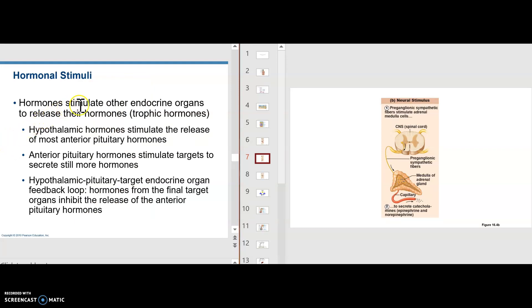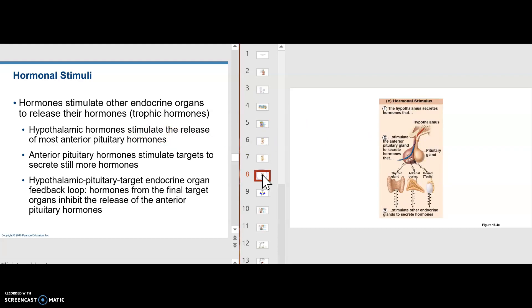Hormonal stimuli. Hormones stimulate other endocrine glands to release their hormones. These are called trophic hormones. A trophic hormone, by definition, is a hormone released from one endocrine gland that can go to another endocrine gland and make it release hormone. Hypothalamic hormones stimulate the release of most anterior pituitary hormones. The hypothalamus would send down a hormone that would cause the anterior pituitary to release a hormone.